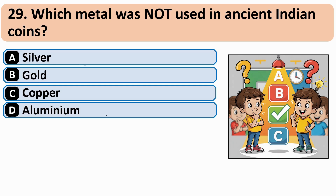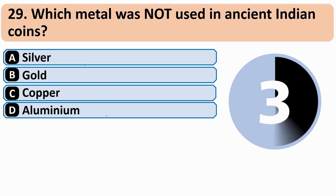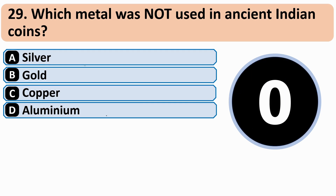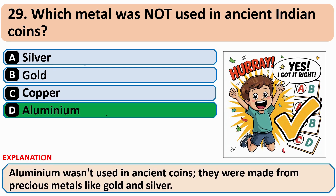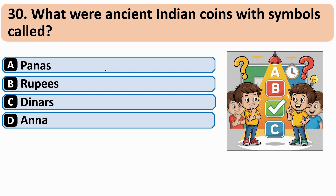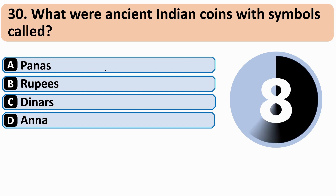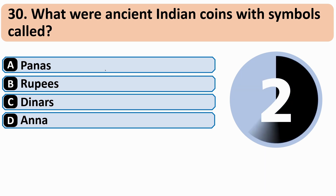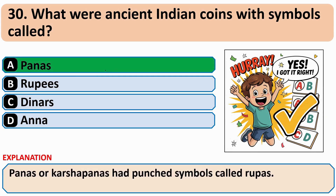Which metal was not used in ancient Indian coins? The correct answer is D — Aluminium. What were ancient Indian coins with symbols called? The correct answer is A — Panas.